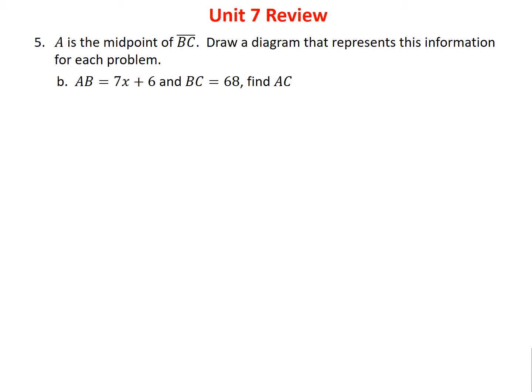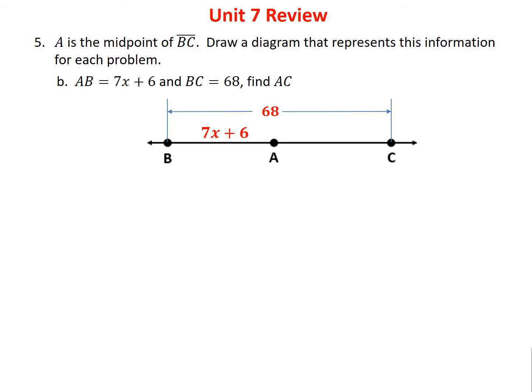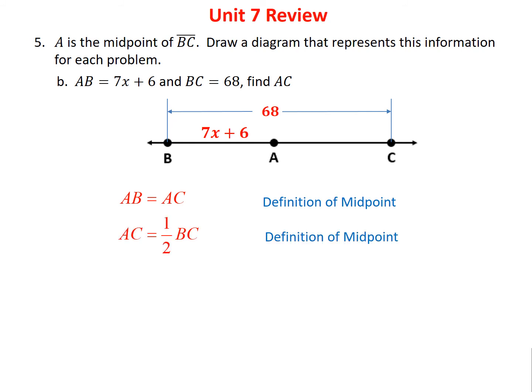Problem 5B: same diagram, A is the midpoint of BC. This time AB = 7X + 6 and the whole length BC = 68; find AC. By definition, AC is half of BC, so AC = 68 / 2 = 34. Not much algebra needed — the answer is 34.